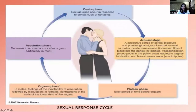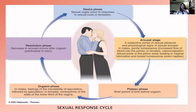And then came the Basson model, which was a circular model. What he essentially did was divide the excitement phase into a desire phase and an arousal phase. We will be talking about each stage now and what are the problems that we encounter in our day-to-day practice.